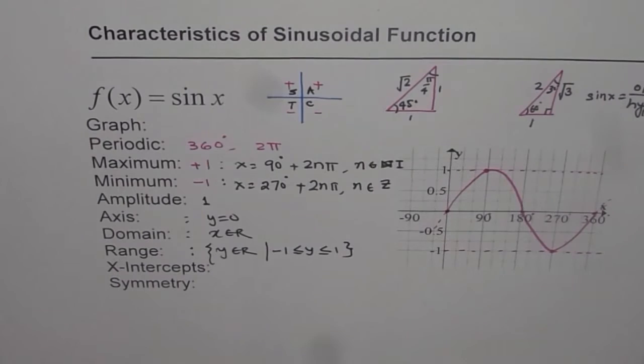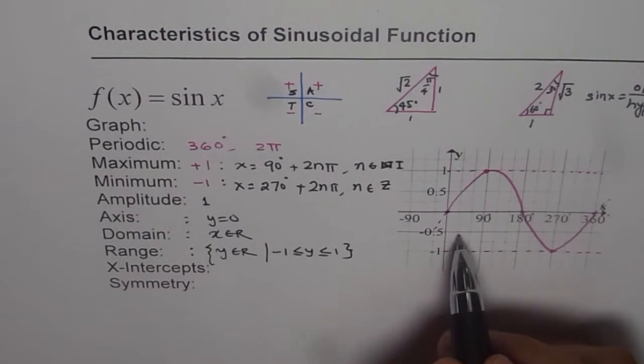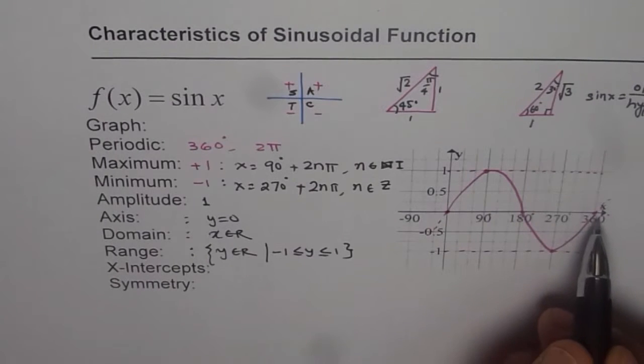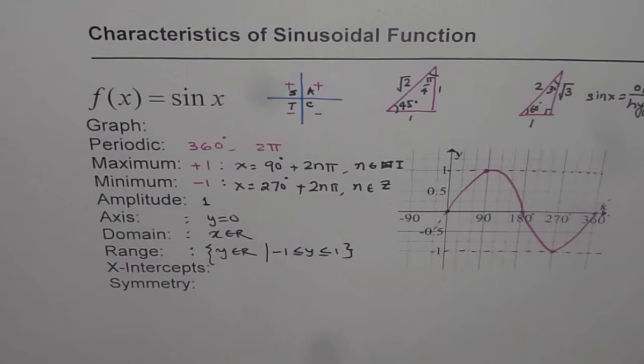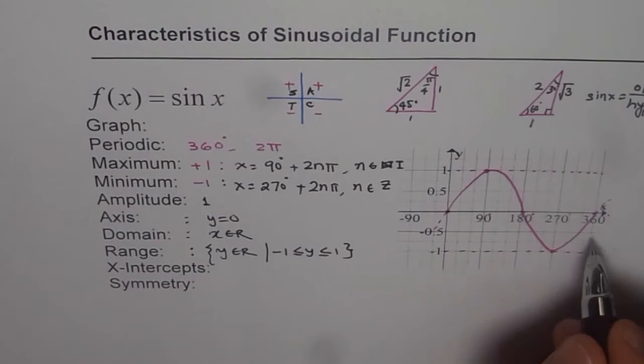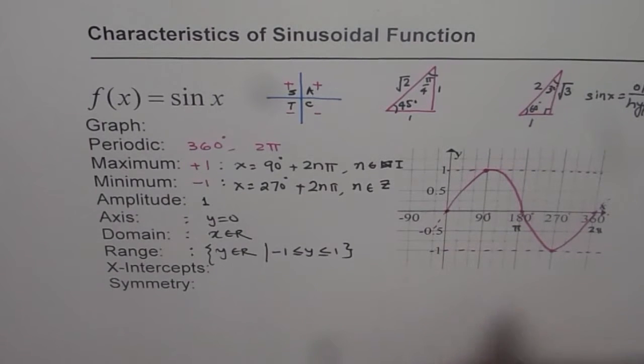X-intercepts. As you can see, the x-intercepts are at 0, 180, 360. So basically it is in terms of π. If I write this as 2π and this is π.